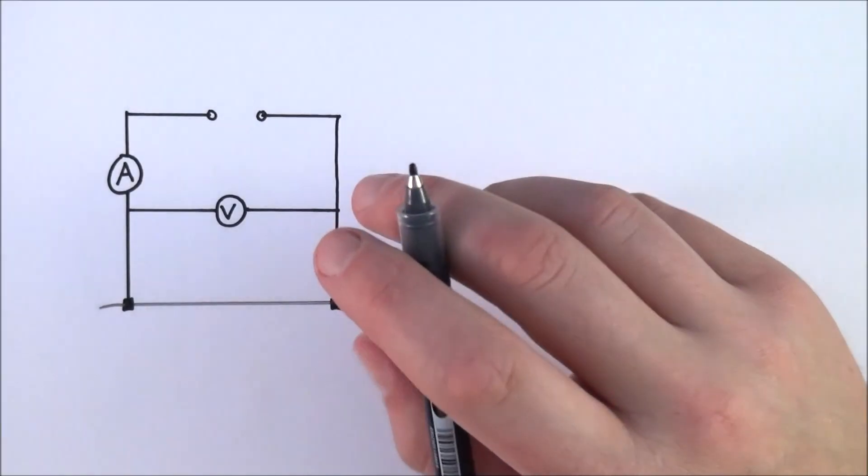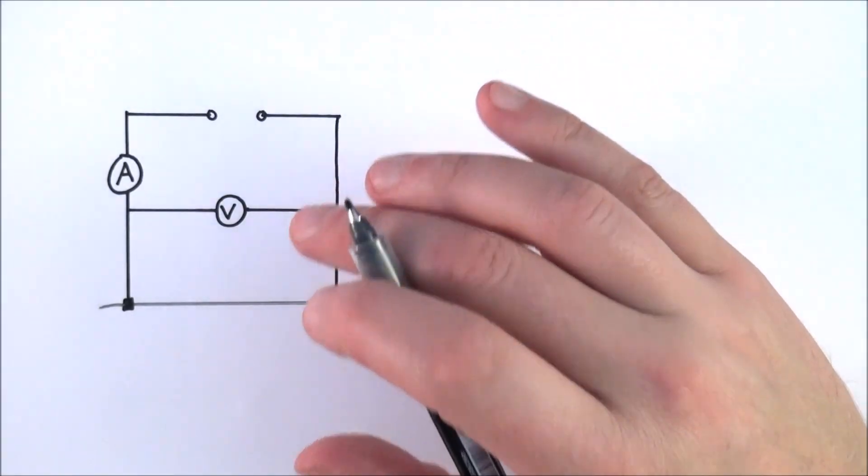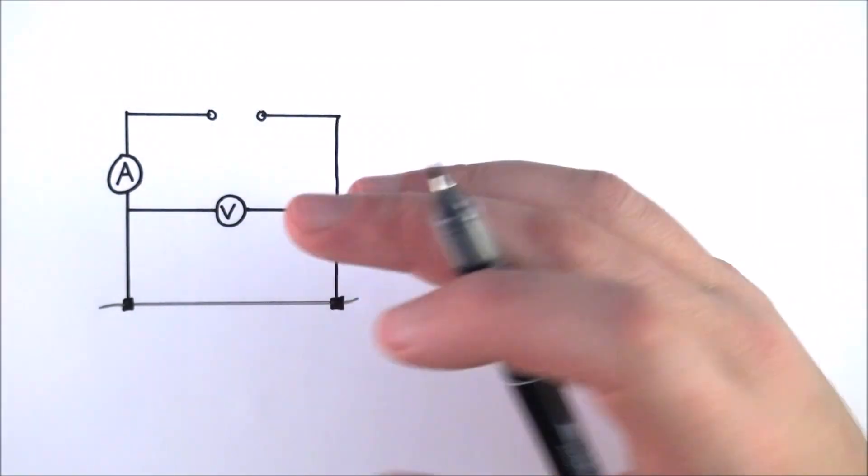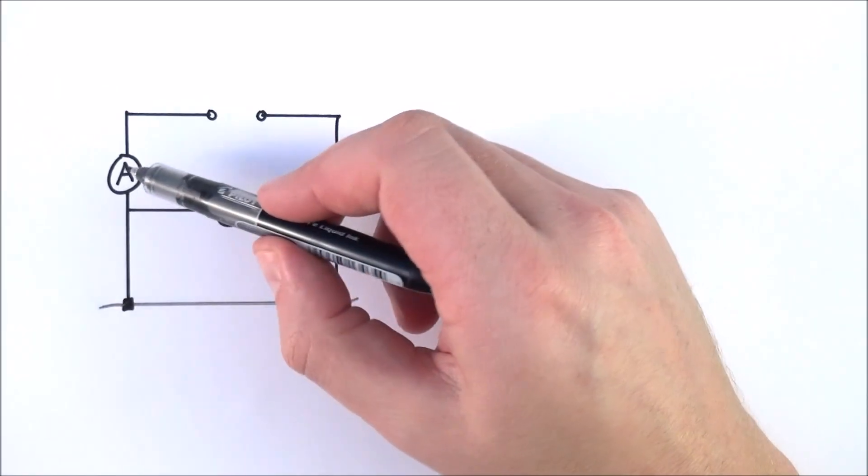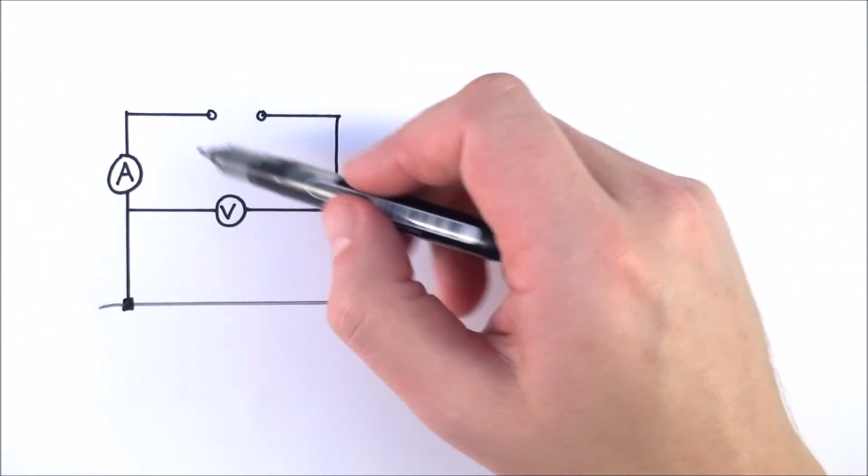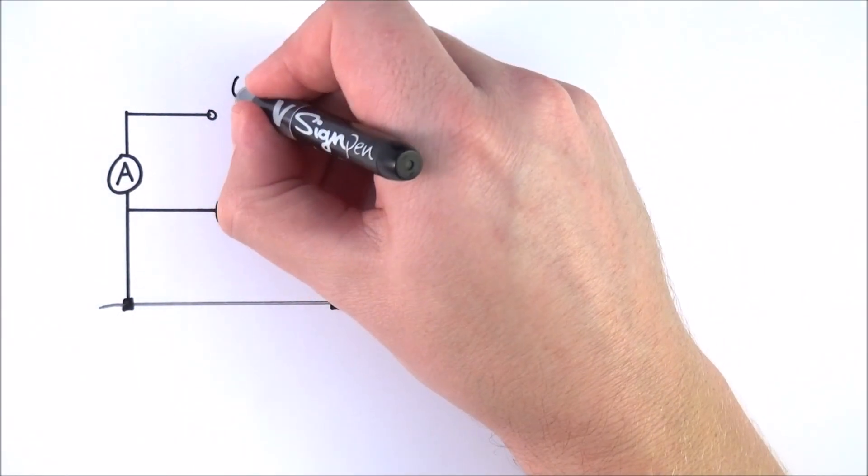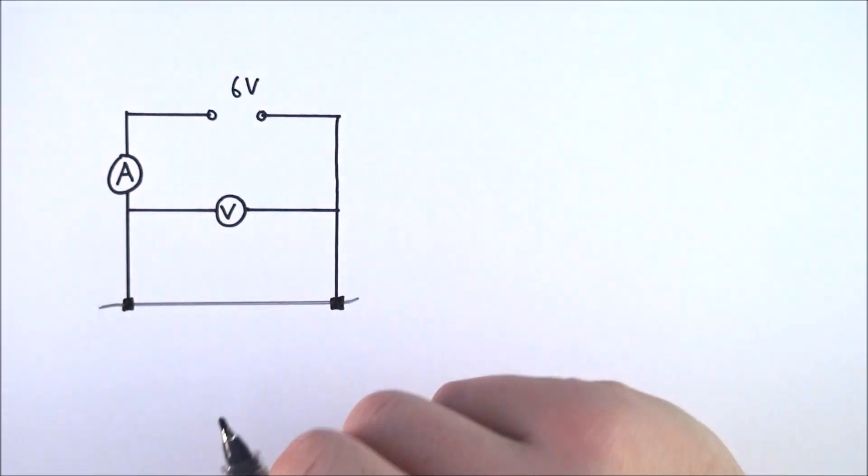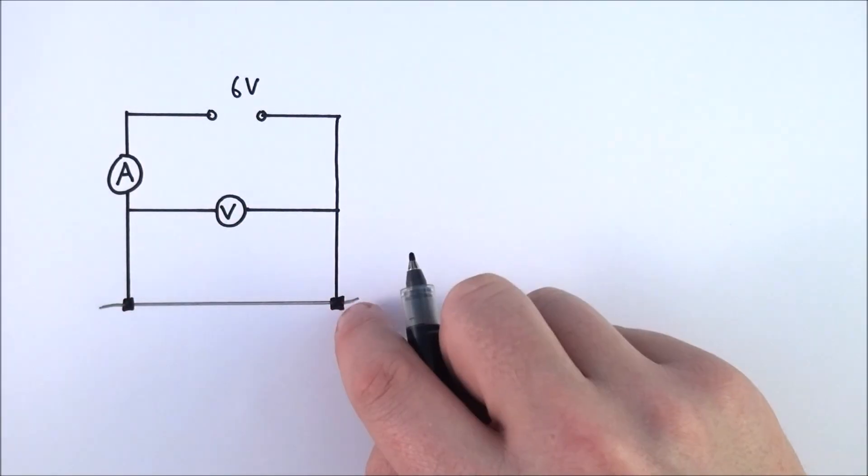This is a basic setup of how to measure the resistivity of a wire. The equipment you need is an ammeter, a voltmeter, and some kind of power supply which goes up to about six volts. You then have a couple of crocodile clips on the end of leads.